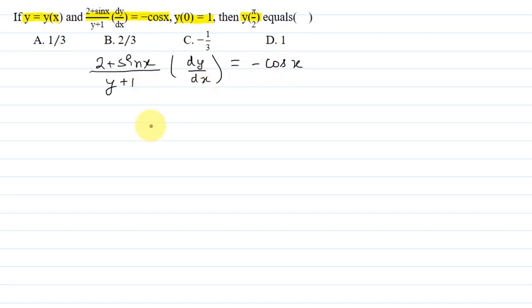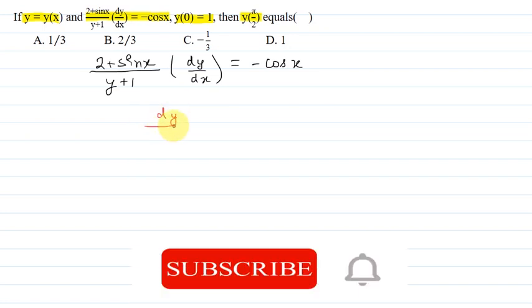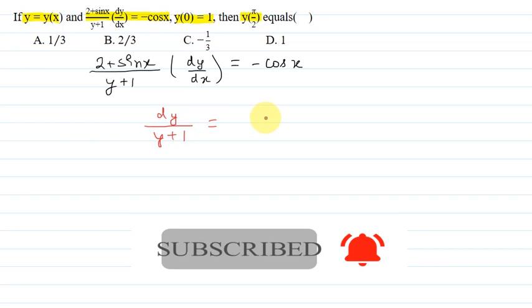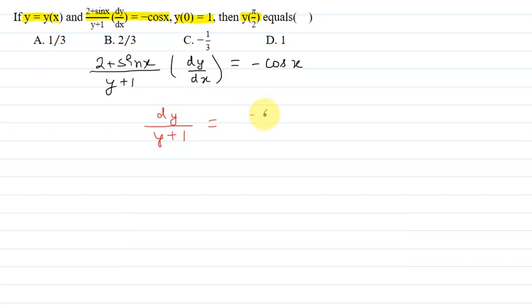So the terms of y go to the left-hand side: we get dy/(y + 1). And on the right-hand side we have -cos x / (2 + sin x) dx.